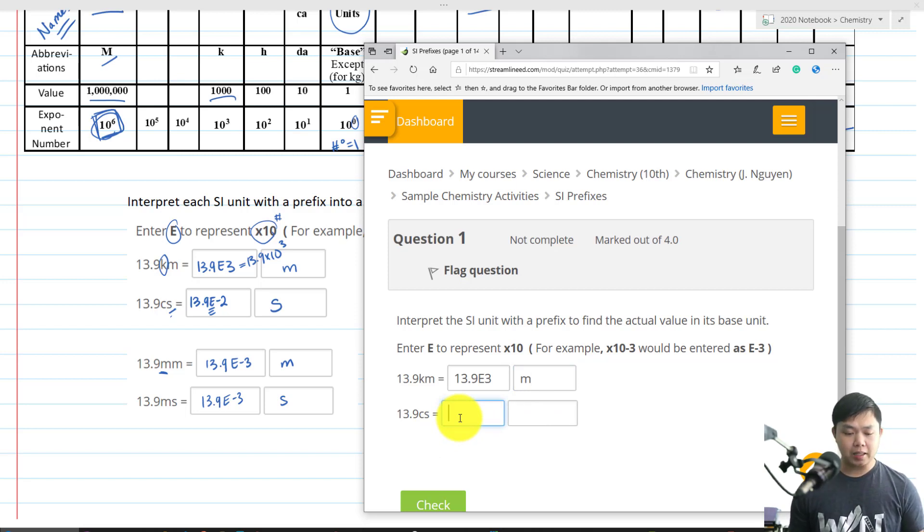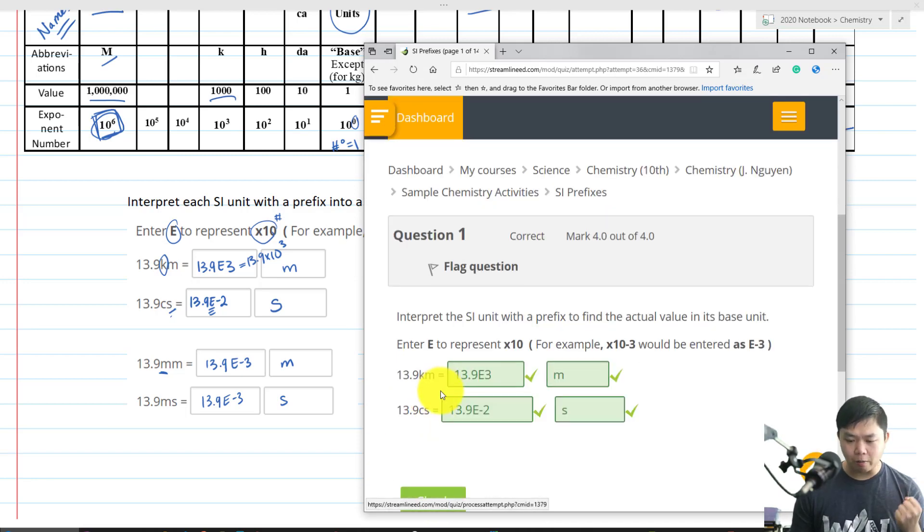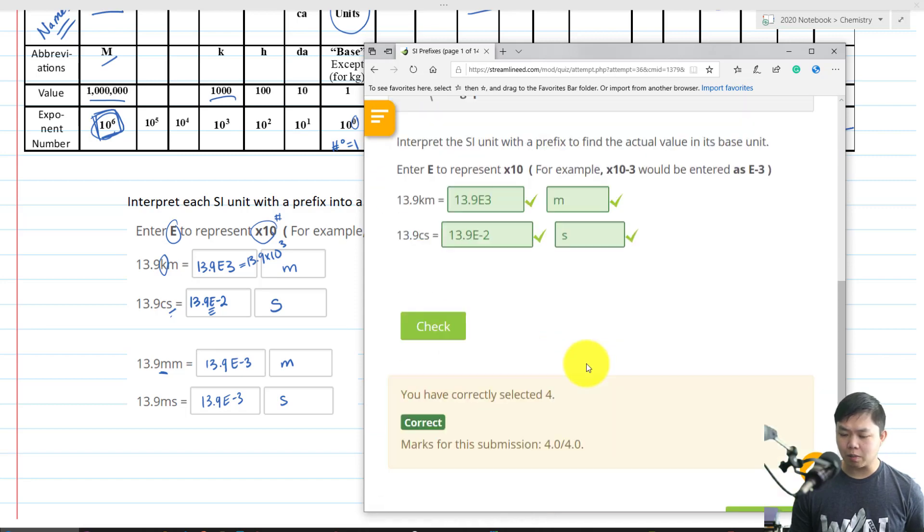How about 13.9 CS? Again, C is for what? 10 to the negative 2, so we have 13.9 E to the negative 2 and then S. Now let's check our answer. And there you go. We got it right. Let's move on to the next problem.